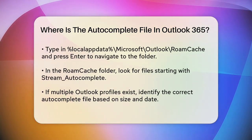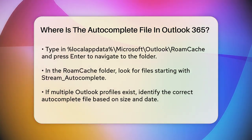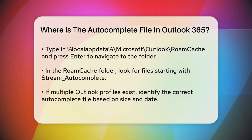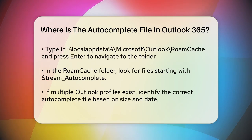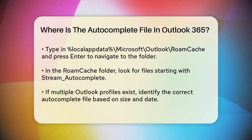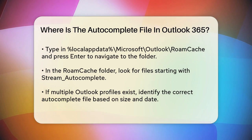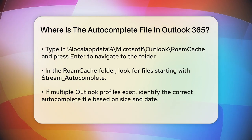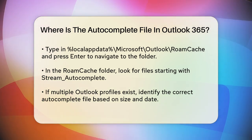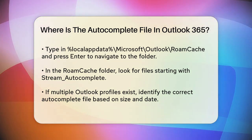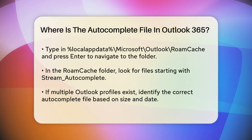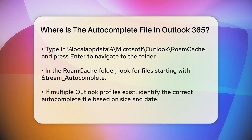Once you're in the RoamCache folder, you'll see several files starting with Stream_Autocomplete. These files are where your autocomplete data is stored. If you have multiple Outlook profiles, you might see multiple files here, so you need to identify the correct one.